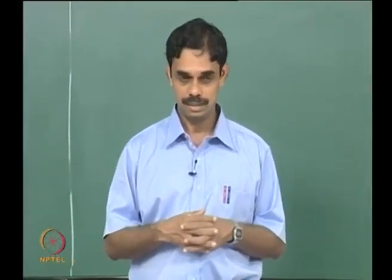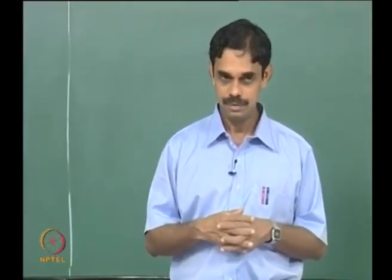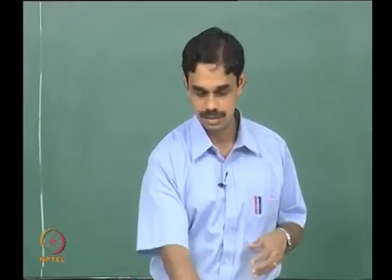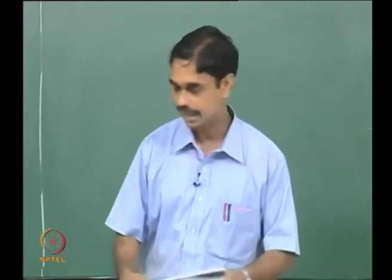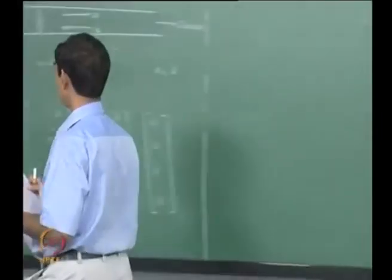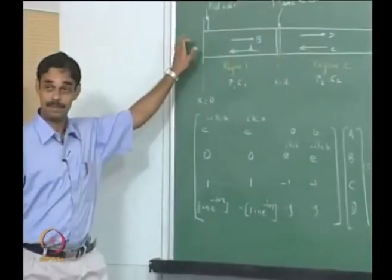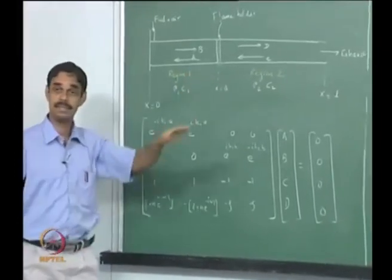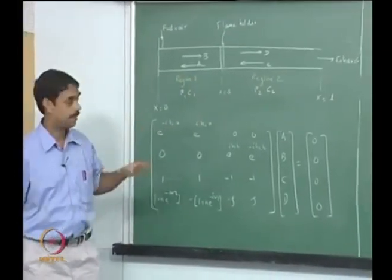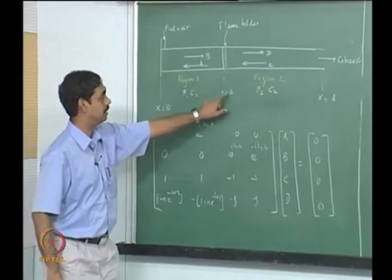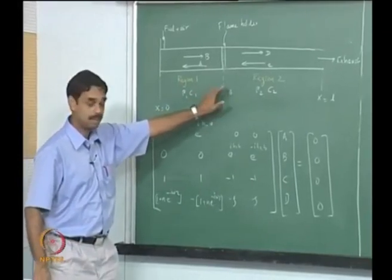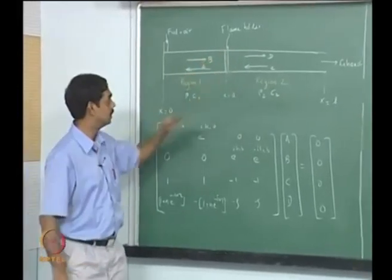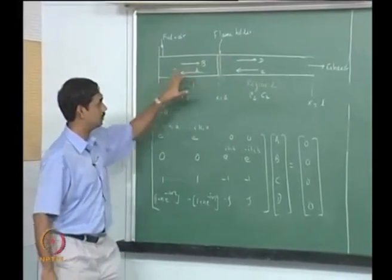This is a very famous classical model. And then we tried to find the stability of the system. So just to recap, this is the pipe with length L — there is a pipe with length L and somewhere in the duct we have kept a heat source.